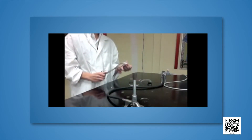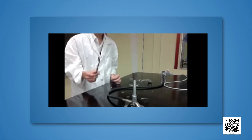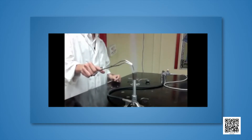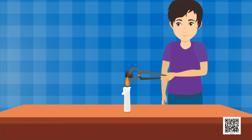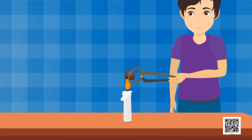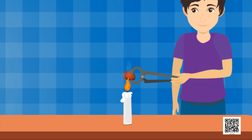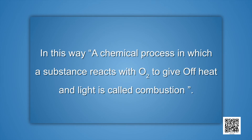Let's start with combustion. In class 7th we had performed an activity in which magnesium ribbon is burnt to form magnesium oxide, producing heat and light. Now we are going to perform a similar activity with a piece of charcoal. Hold the piece of charcoal with a pair of fire tongs and bring it near the flame of a Bunsen burner. We find that charcoal burns in air producing carbon dioxide, heat, and light. A chemical process in which a substance reacts with oxygen to give off heat and light is called combustion.